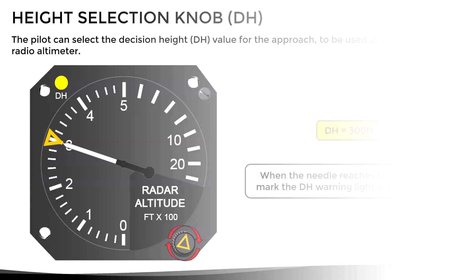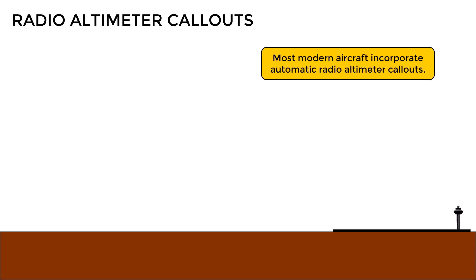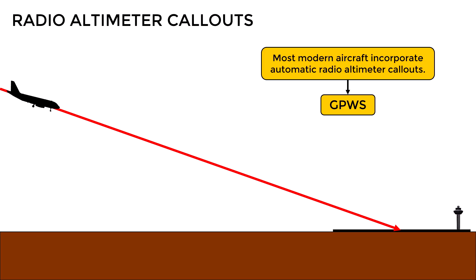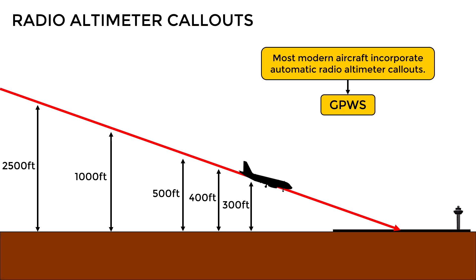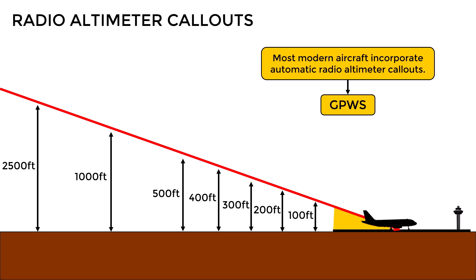This leads us to the radio altimeter call-outs. Most modern aircraft incorporate automatic radio altimeter call-outs, which are part of the Ground Proximity Warning System, or GPWS. This system emits call-outs at certain heights in relation to the ground, with the main objective of indicating to the pilot the current height of the aircraft above the ground without the need to look directly at the radio altimeter, since during an approach the pilot's attention is normally focused on other parameters.